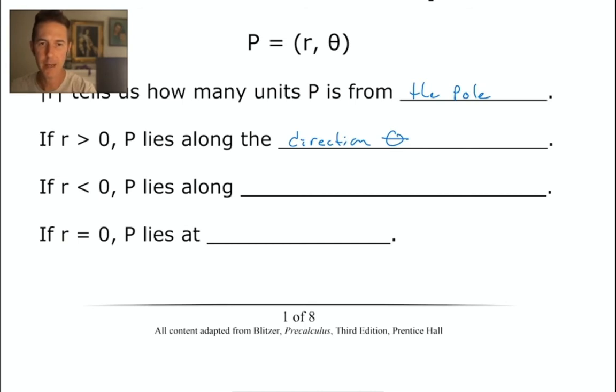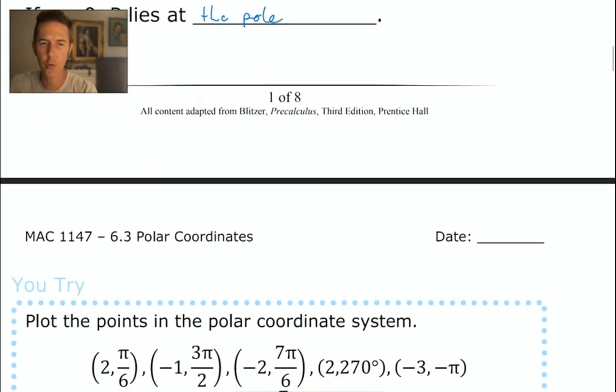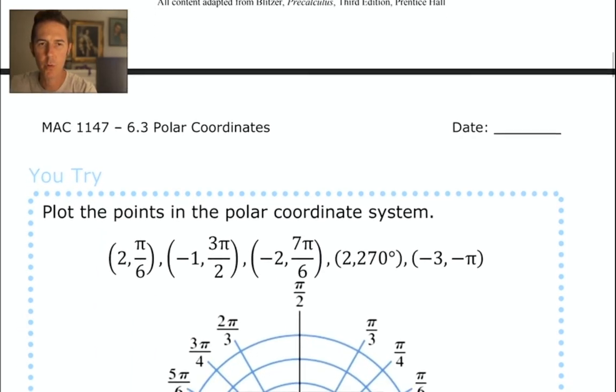I always imagine it as though I'm facing the direction that I'm supposed to be facing, and then I walk backwards away from that direction instead of walking forwards. So if r is less than 0, p lies along the direction theta plus pi, or theta minus pi, or plus or minus 180 degrees. We're going to see examples of that also, and if our r value is equal to 0, then p lies at the pole. And that happens every once in a while.